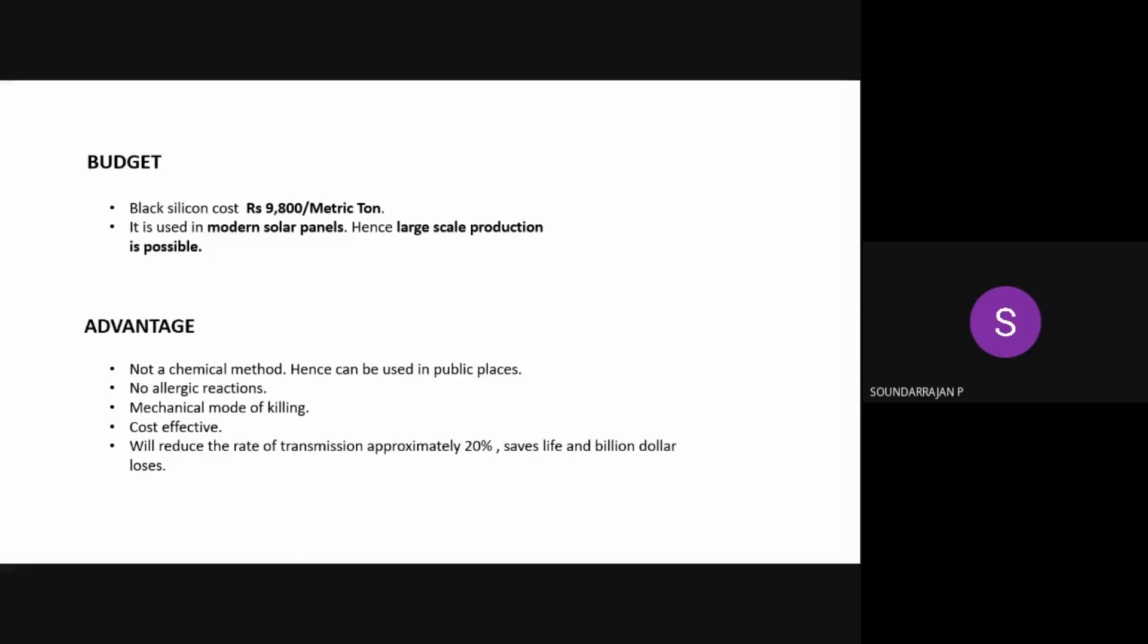The cost of black silicon is rupees 9800 per metric ton. One of the advantages of this method is that no chemicals are used hence there would be no side effects such as allergic reactions. Thank you.